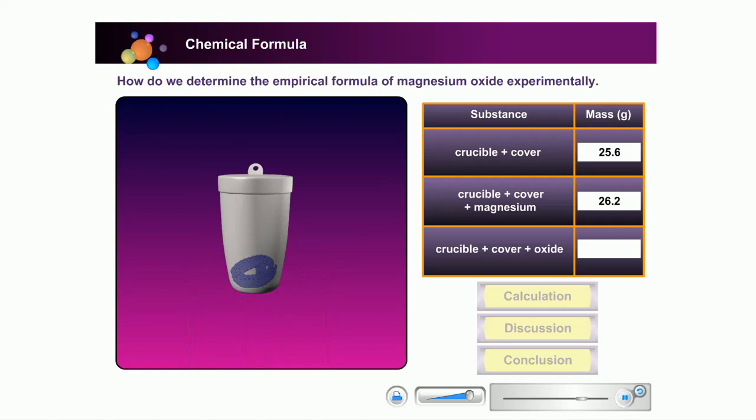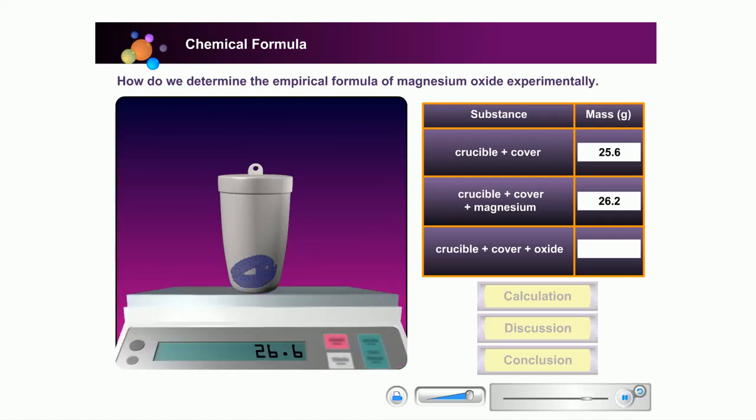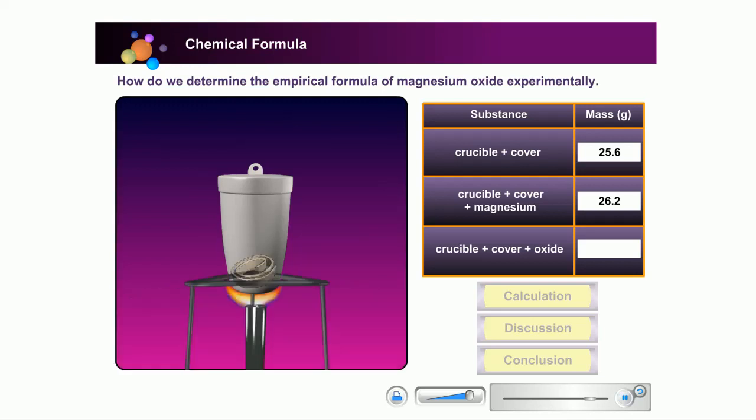When the magnesium stops burning, cool and weigh the covered crucible. The mass is recorded. Repeat the heating, cooling and weighing until the final mass becomes constant. Record the reading. Key in the final mass in the table.